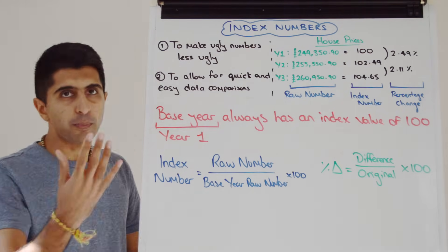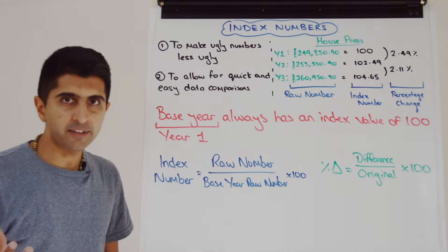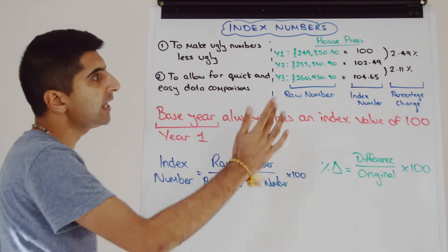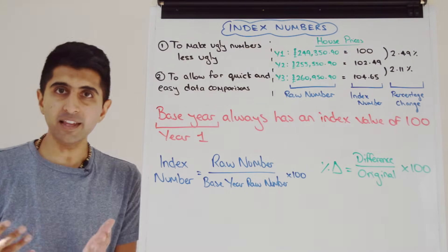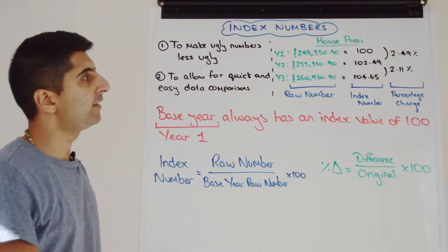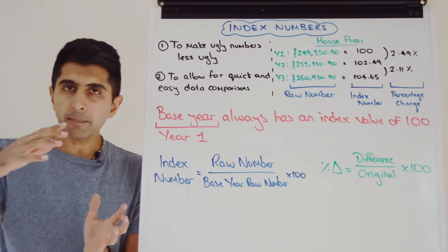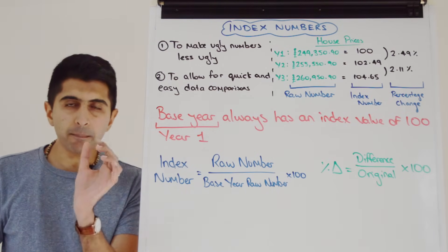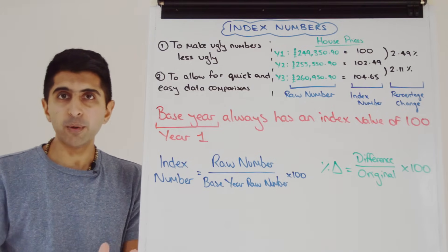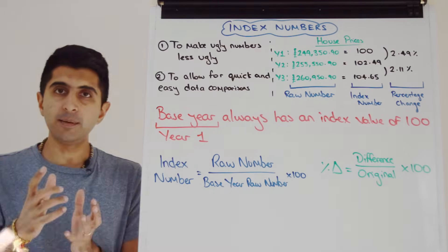So let's see how we can do both of those things, looking at a random example on the right-hand side here. We're looking at house price data in the UK. There are three years: year one, year two, and year three. Each figure represents the average house price in the UK in that year. What we want to do is convert these ugly raw numbers in green into index numbers. The first thing we do whenever we want to make an index is we have to pick a base year — we can pick any year, we just have to call it the base year. I've said that year one here is going to be our base year.